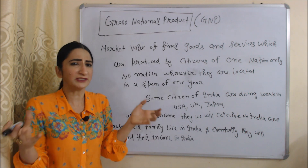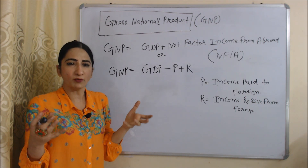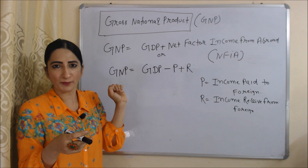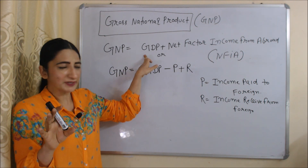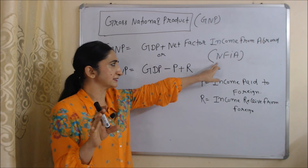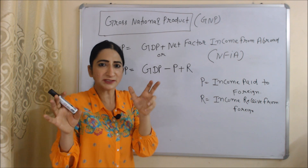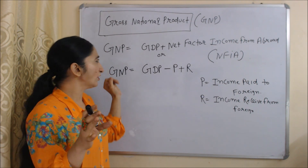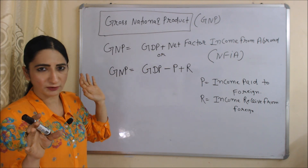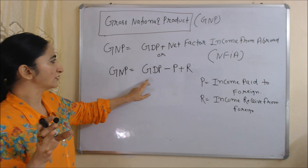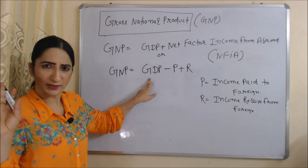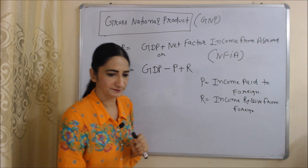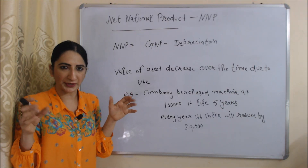Now we'll see the formula for calculating GNP. GNP = GDP + Net Factor Income from Abroad (NFIA). NFIA is mainly the difference between factor income received from abroad and factor income paid to abroad. The formula is: GNP = GDP − P + R, where P means income paid to foreigners and R means income received from foreigners.